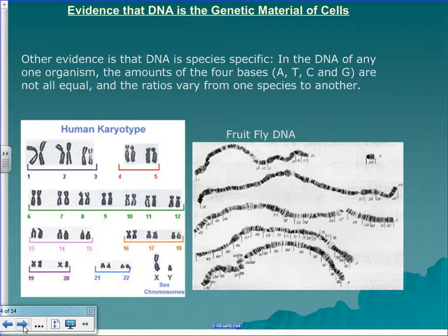Other evidence is that DNA is species specific. The number of chromosomes is different for essentially every organism — not just different numbers, but their chromosomes look different. For example, the fruit fly has eight chromosomes in their karyotype, and that codes for all the stuff that a fruit fly needs.